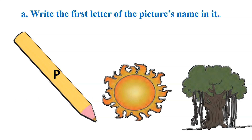Now the second picture is sun — S, S, sun. And phonic sound of letter S is S, so the second picture will get letter S. This way, use phonic sound and complete your activity. Third picture is tree — T, T, tree. So the letter will be T.